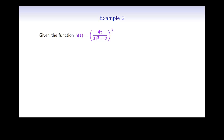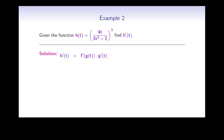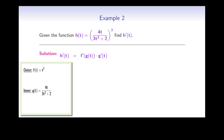Here's the second example. Given the function h of t is 4t divided by 3t cubed plus 2, all to the third power, find h prime of t. The chain rule tells us that the derivative of h of t is the derivative of the outermost function evaluated at the inner function times the derivative of the inner function. In this case, the outermost function is t cubed, and the inner function is 4t divided by 3t cubed plus 2. To find the derivative of the innermost function, we'll need to use the quotient rule.